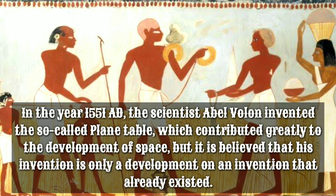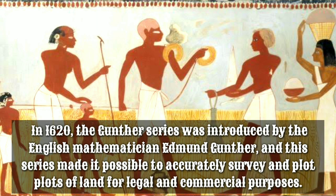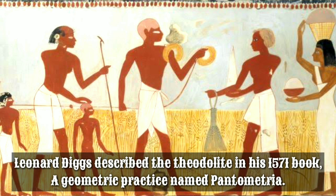In the year 1551 AD, the scientist Abel Vollon invented the so-called plane table, which contributed greatly to the development of surveying, though it is believed his invention was only a development on something that already existed. In 1620, the Gunther chain was introduced by the English mathematician Edmund Gunther, and this made it possible to accurately survey and plot plots of land for legal and commercial purposes. Leonard Diggs described the Theodolite in his 1571 book, A Geometric Practice.